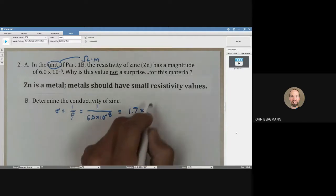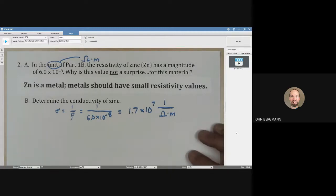It comes out to be 1.7 times 10 to the seventh. And then the units are one over ohmmeters.